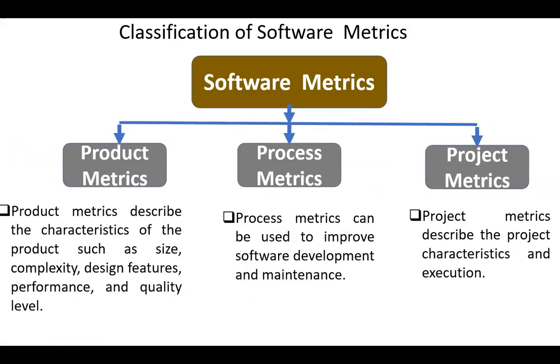Next, classification of software metrics. Software metrics can be classified into the following three major categories: product metrics, process metrics, and project metrics.